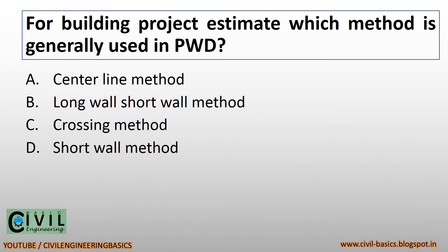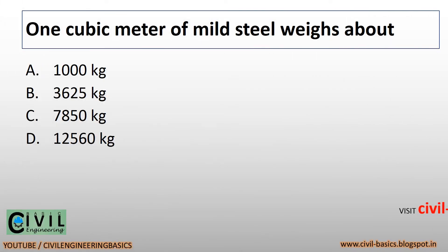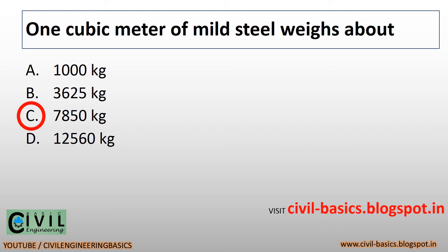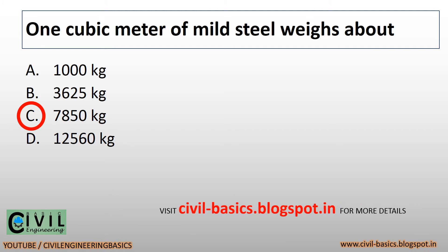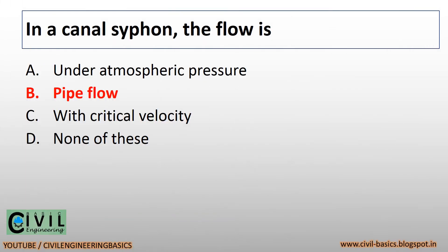For a building project estimate, the method generally used in PWD is the centerline method. One cubic meter of mild steel weighs about 7,850 kilograms. In a canal siphon, the flow is pipe flow.